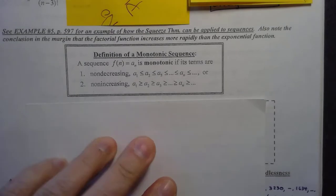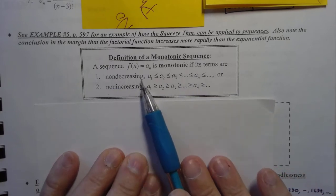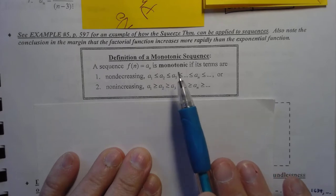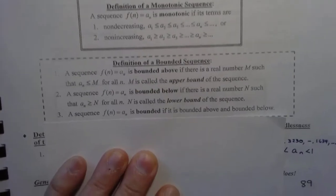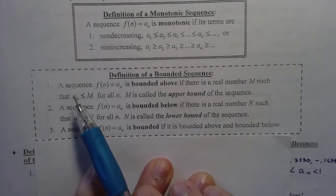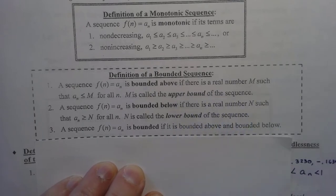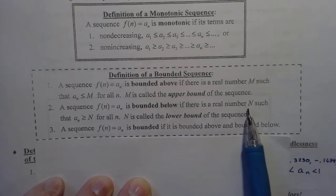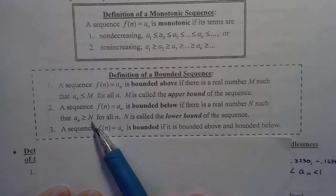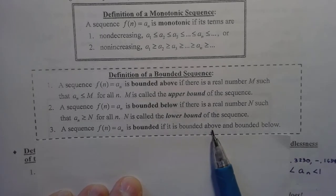Now we have to talk about two special types of sequences. A sequence is monotonic if its terms are non-decreasing — the first term is less than or equal to the second, less than or equal to the third — or if it's non-increasing, the first term is greater than or equal to the second, greater than or equal to the third. A bounded sequence: it is bounded above if there's a real number M such that A sub n is less than M for all n — M is the upper bound. It is bounded below if there's a real number N such that A sub n is greater than or equal to N for all n — that's the lower bound. A sequence is bounded if it is bounded above and bounded below.